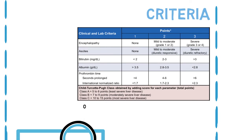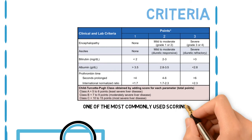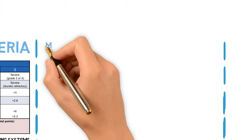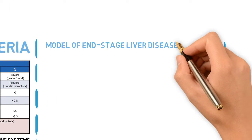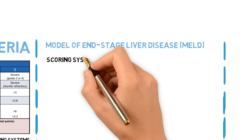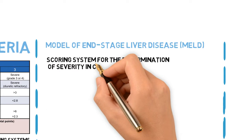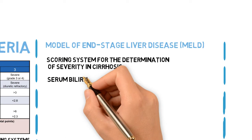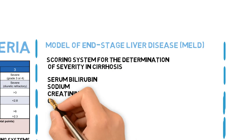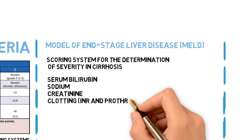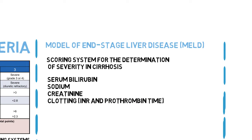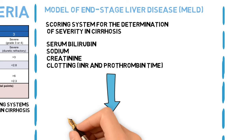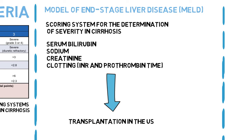Criteria. Child-Pugh score is one of the most commonly used scoring systems to determine disease severity in cirrhosis. The Model of End-Stage Liver Disease (MELD) is a more recent scoring system; the MELD score is electronically calculated from serum bilirubin, sodium, creatinine, and clotting (INR and prothrombin time) by a specific computer program. This is the classification system used for the allocation of livers for transplantation in the US.